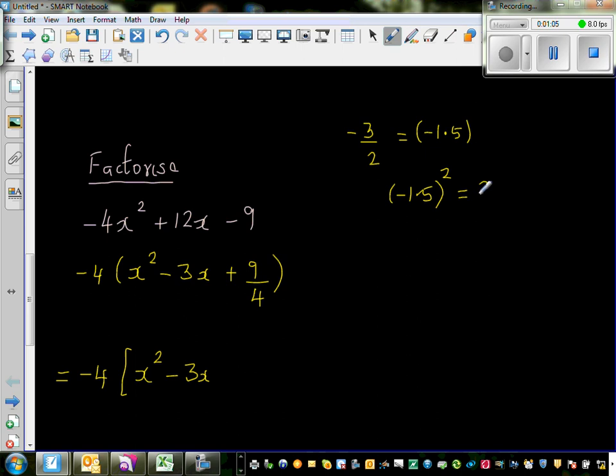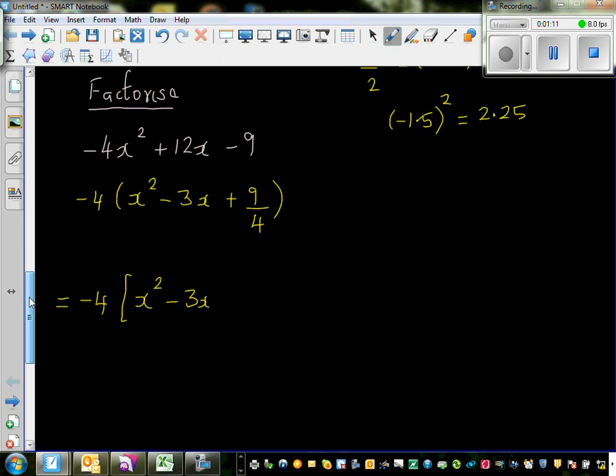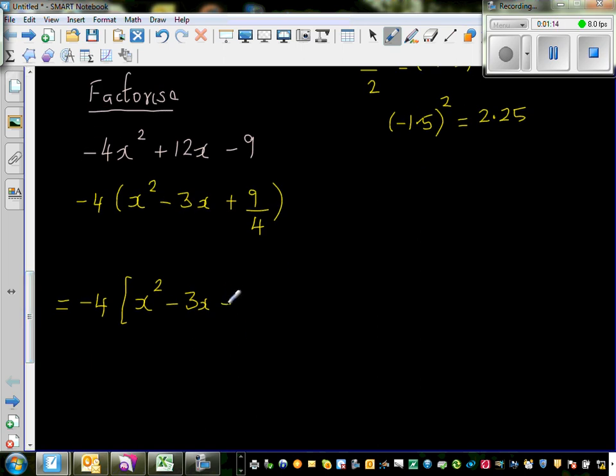Next step is you square -1.5. The square of -1.5, you can use your calculator, is 2.25. I'm not going to write 2.25; I'm going to write -1.5 for a reason. So I'm going to write +(-1.5)².